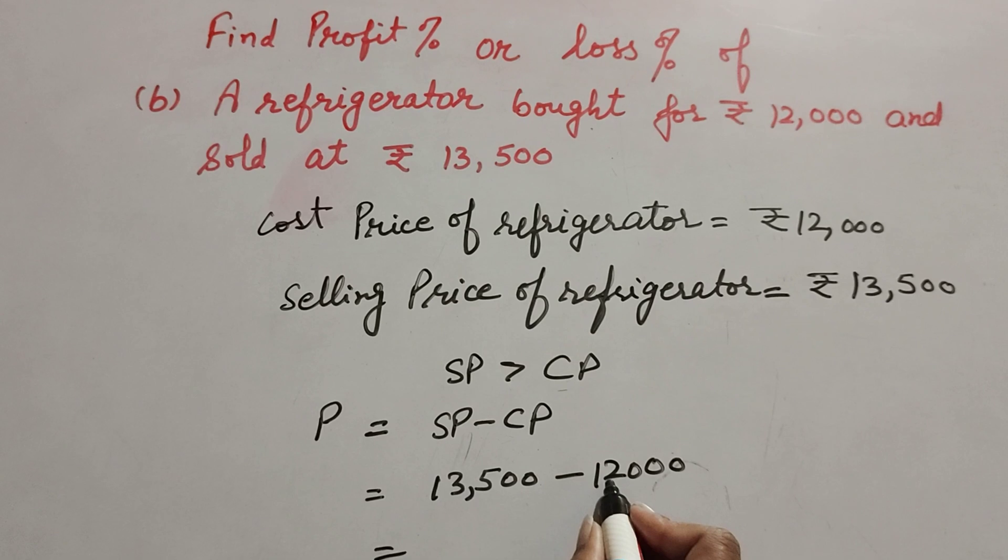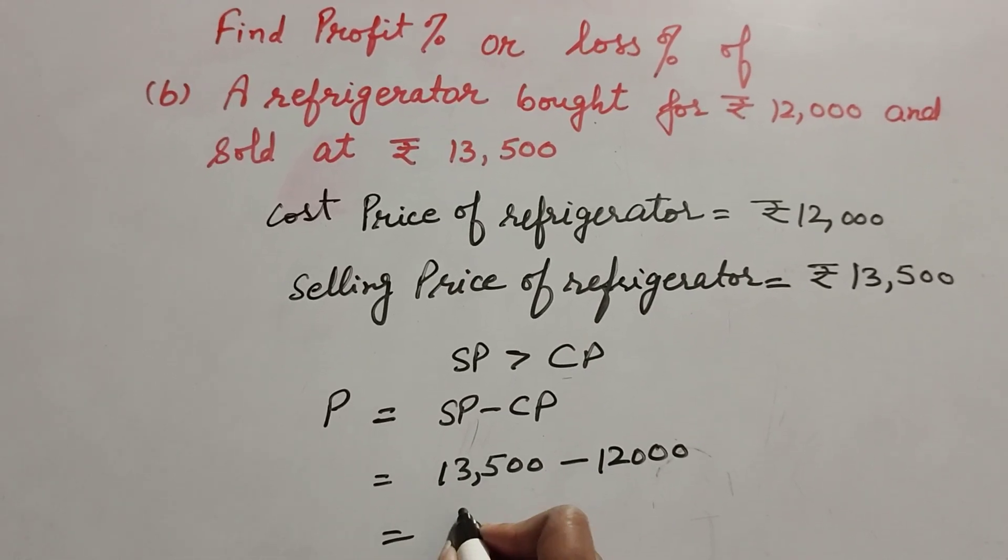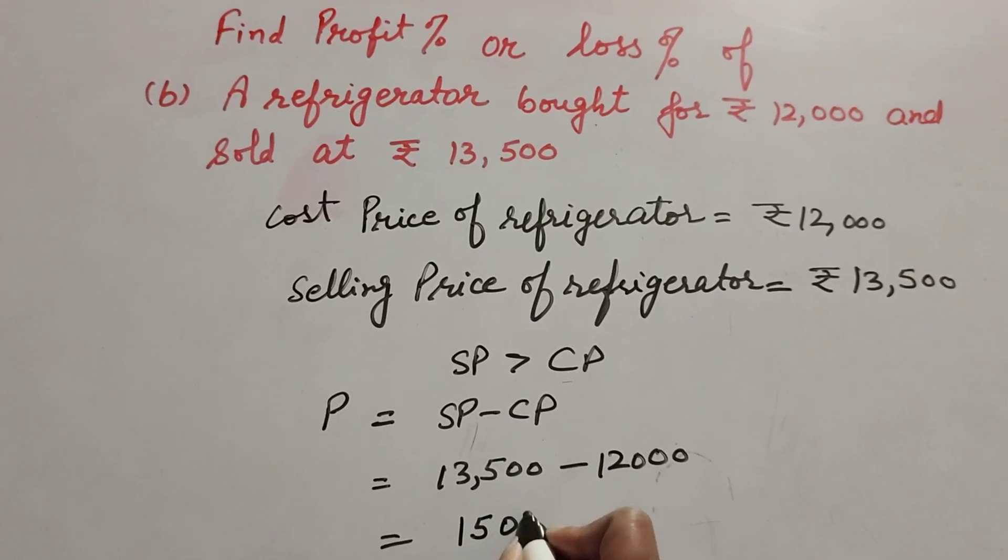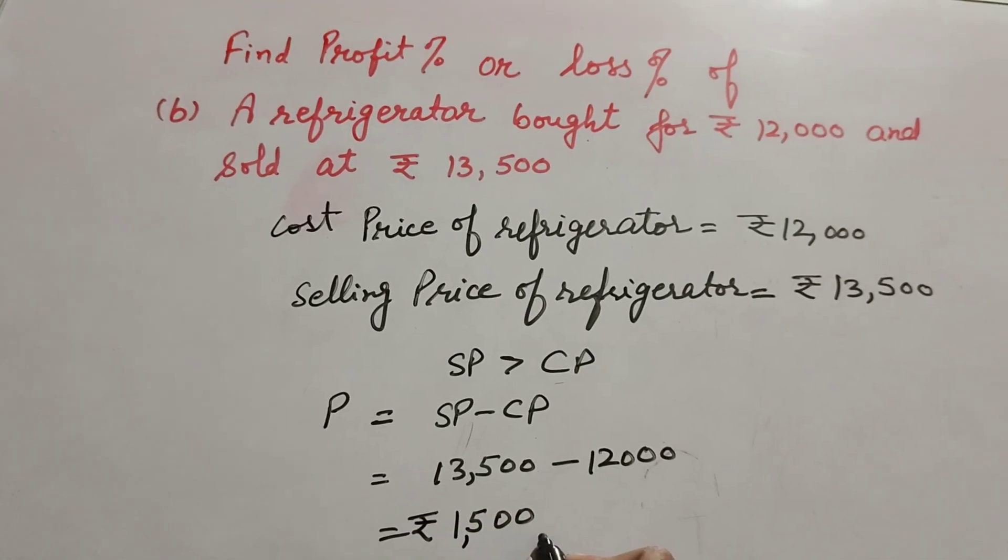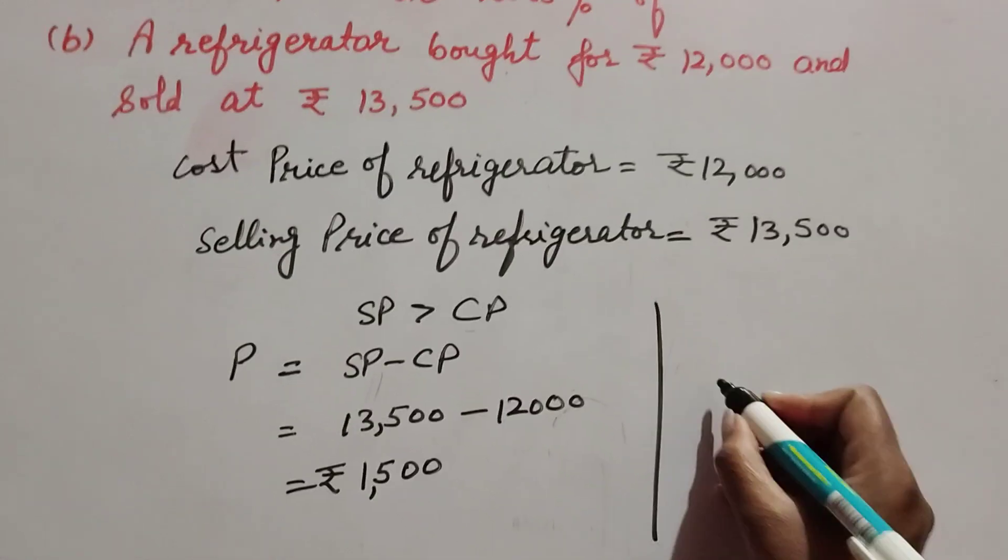13,500 minus 12,000 equals Rs 1,500. So we get profit equal to Rs 1,500. Now we find profit percentage.